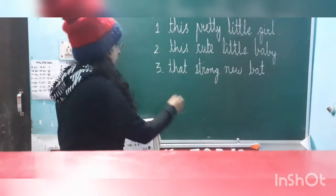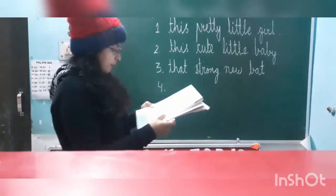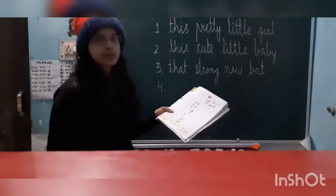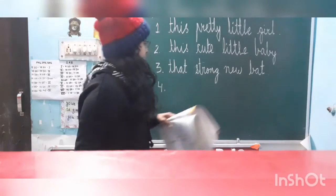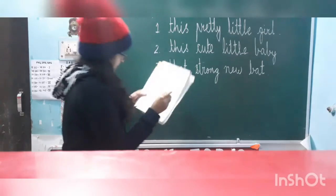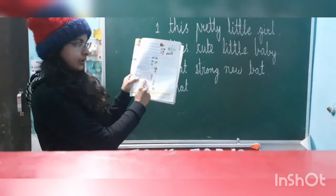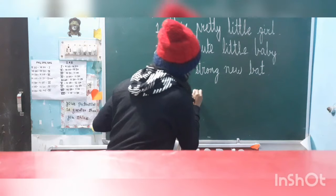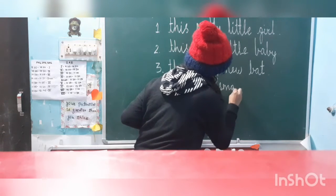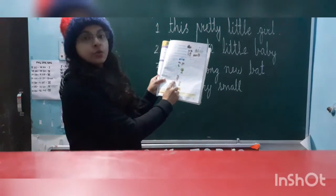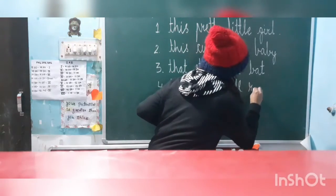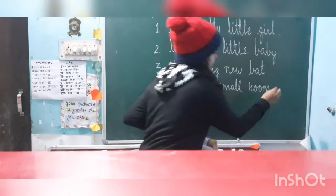Fourth one: 'Those every small rooms.' Again, 'those' — the singular of 'those' is 'that,' so we will write 'that.' Next we will write the same: every, small. And we have to change 'rooms' to its singular form: 'room.' Answer: That every small room.